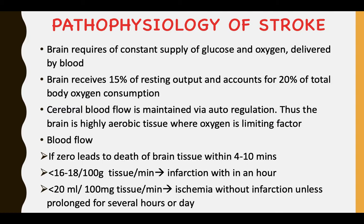Regarding pathophysiology, the brain requires a constant supply of glucose and oxygen delivered by blood. It receives 15% of the resting cardiac output and accounts for 20% of total body oxygen consumption. Cerebral blood flow is maintained via auto-regulation, making the brain highly aerobic tissue where oxygen is a limiting factor. Blood flow of 0 leads to death of brain tissue within 4 to 10 minutes; less than 16–18 ml per 100g tissue per minute causes infarction within an hour; less than 20 ml per 100g tissue per minute leads to ischemia without infarction unless prolonged for several hours or days.